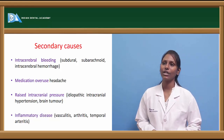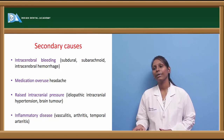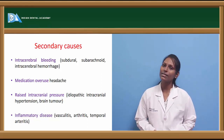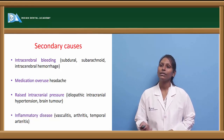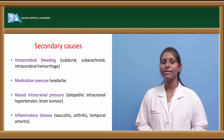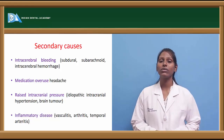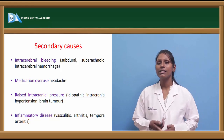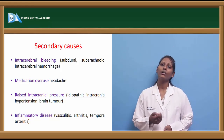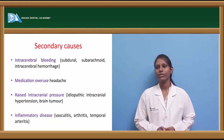Secondary causes of headaches include intracerebral bleeding — occurring in the subdural, subarachnoid, or intracerebral regions — and medication overuse headache. Certain medications when overused, such as pentoxifylline, and any drug abuse or drug overuse can cause medication overuse headaches.